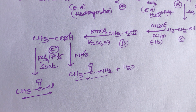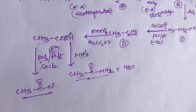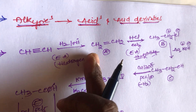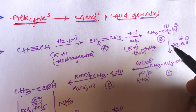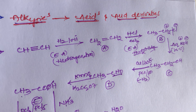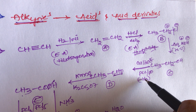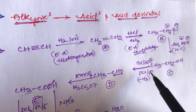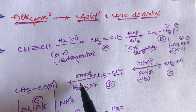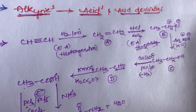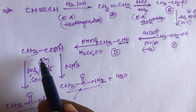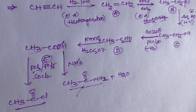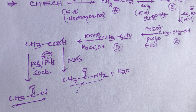This is the simple trick for conversion from alkyne to acids and acid derivatives. First step is hydrogenation — addition of hydrogen. Second step involves HCl, that is hydrohalogenation. Then nucleophilic substitution reaction with aqueous KOH, followed by dehydrogenation using copper at 300°C. Then this aldehyde undergoes oxidation with KMnO₄ or K₂Cr₂O₇ to give carboxylic acid. Carboxylic acid reacts with ammonia to give acetamide, or with PCl₃/PCl₅/sulfonyl chloride to give acid chloride.